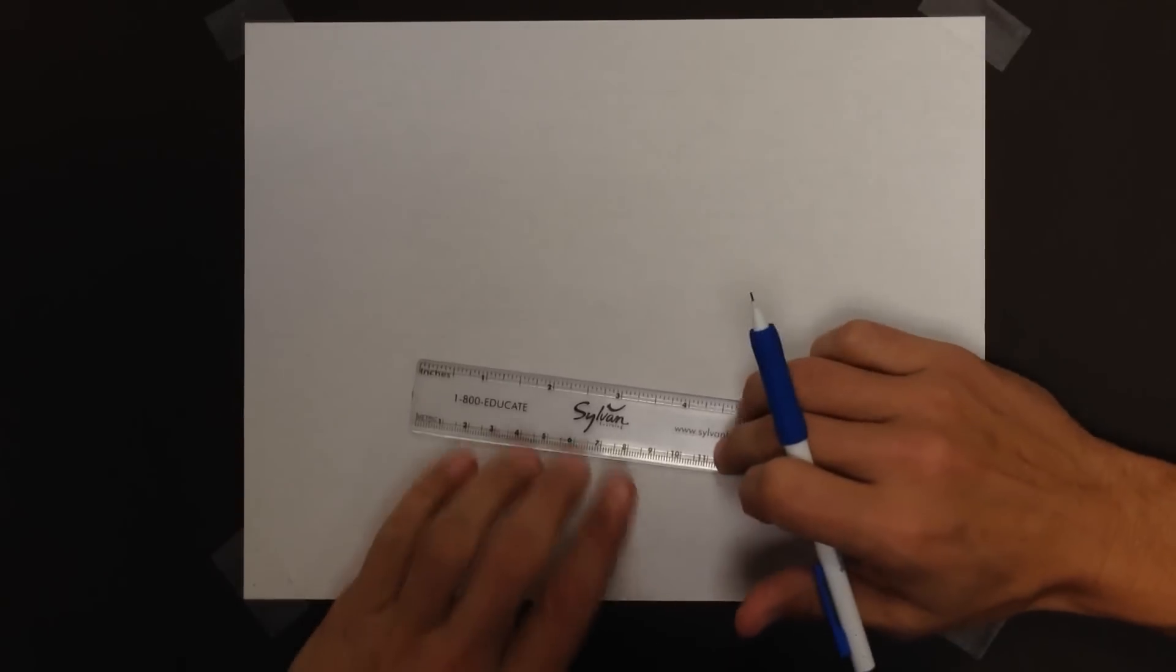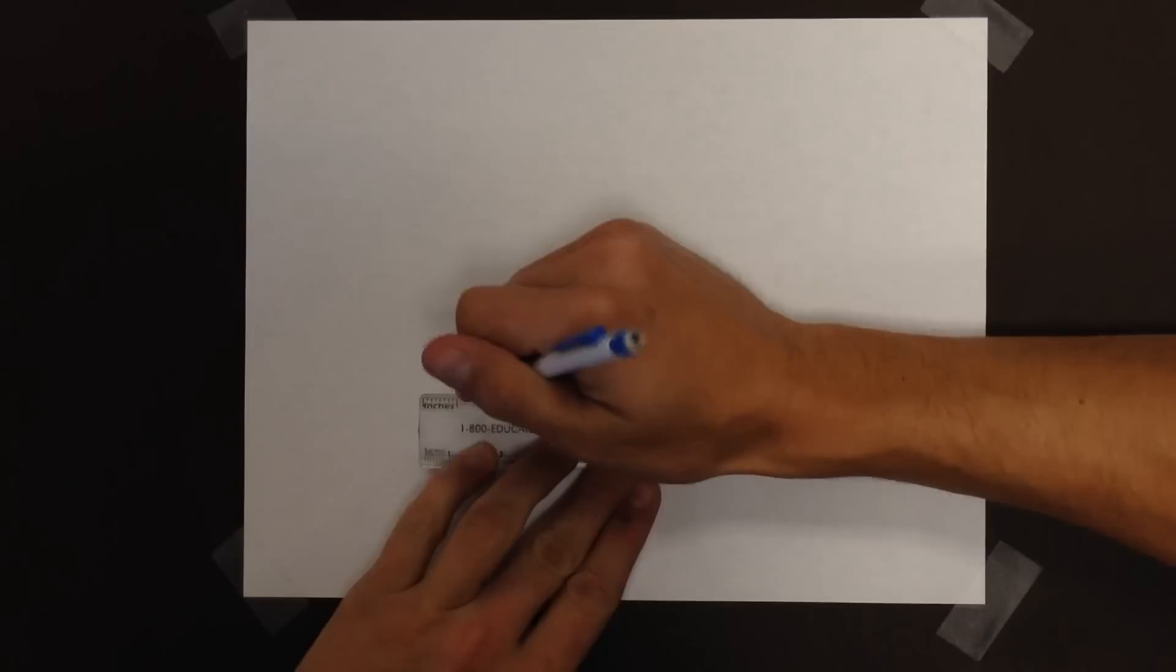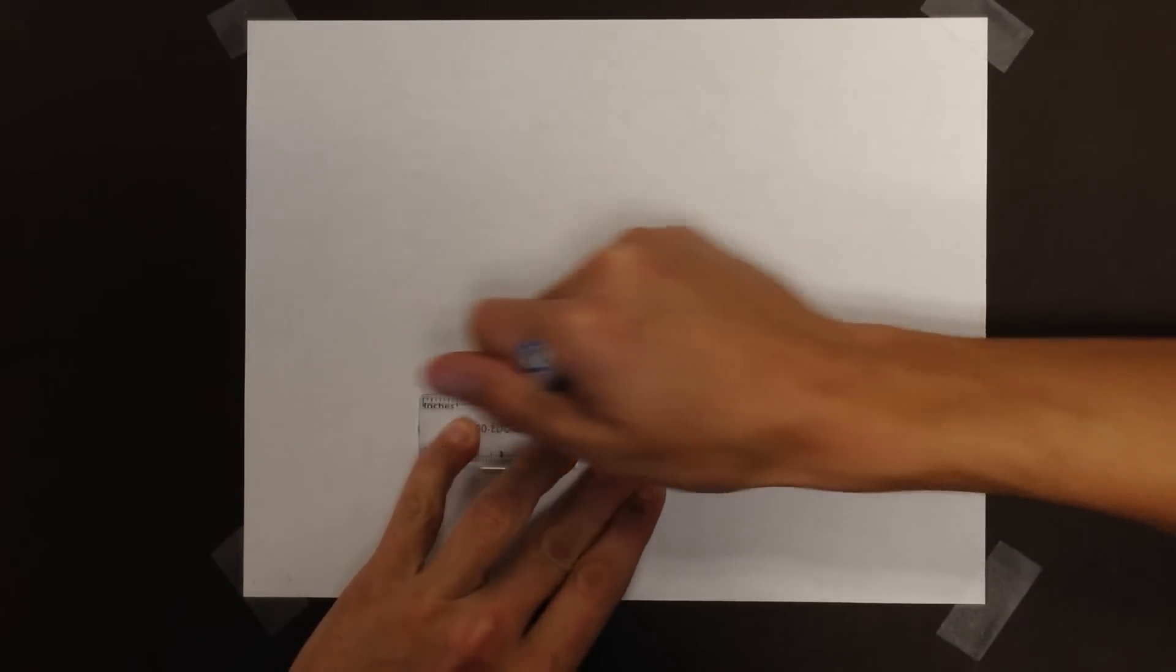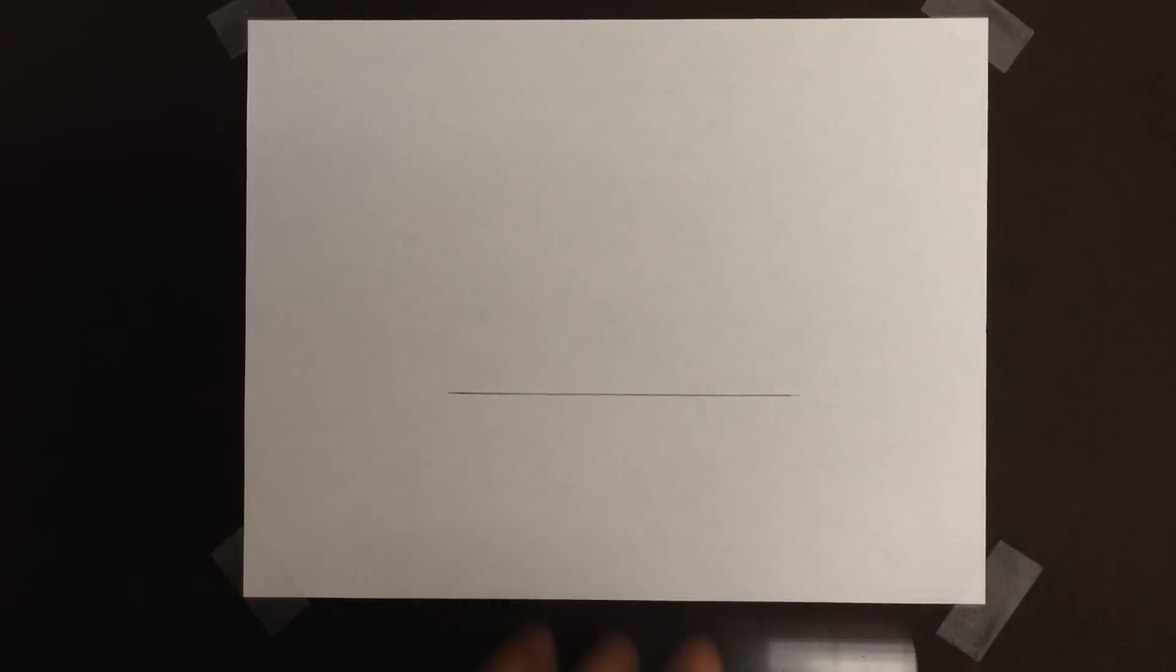I'm just going to start off with a line. I'll draw it however long I really want to. I got a little line, hooray. Now I'm going to consider this line the base of my parallelogram.